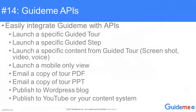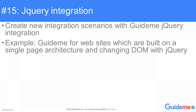Easily integrate GuideMe with APIs: launch a specific guided tour, launch a specific guided step, launch specific content from a guided tour — screenshot, video, voice — launch a mobile-only view, email a copy of tour PDF, email a copy of tour PPT, publish to WordPress blog, or publish to YouTube or your content system. Create new integration scenarios with GuideMe jQuery integration — for example, GuideMe for websites built on a single-page architecture with changing DOM via jQuery.